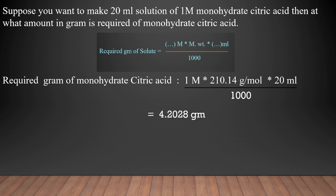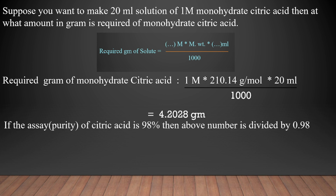This calculation gives 4.2028 grams of monohydrate citric acid. If the assay of the monohydrate citric acid is 98%, then divide by 0.98, which gives 4.2885 grams. So if you want to make 20 ml of a one molar solution of monohydrate citric acid, you need 4.2885 grams.